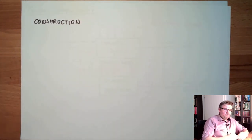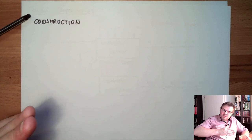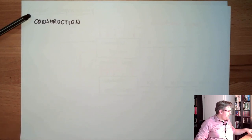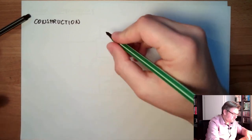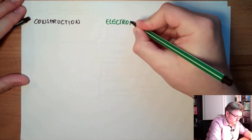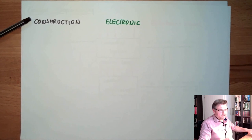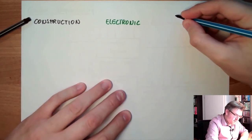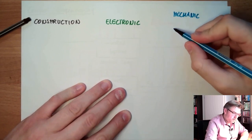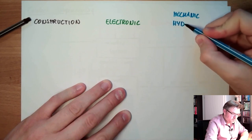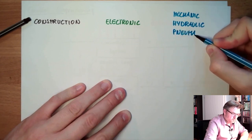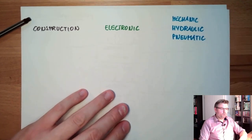Basically we can distinguish between electronic controllers and the others: mechanical, hydraulic, and pneumatic controllers. This is simply the way how they work.